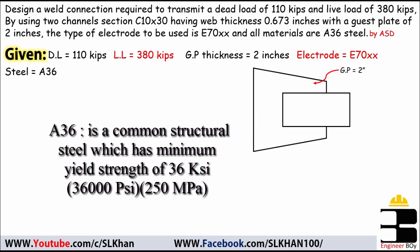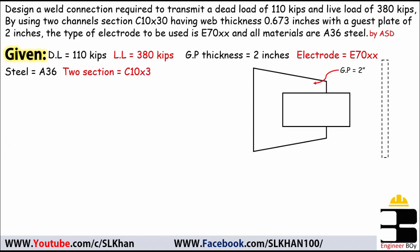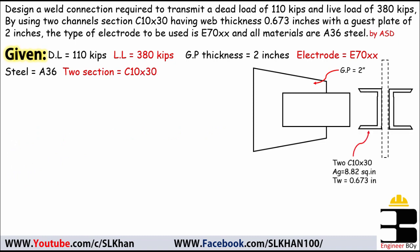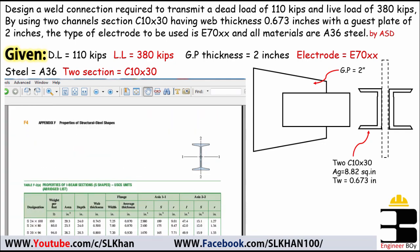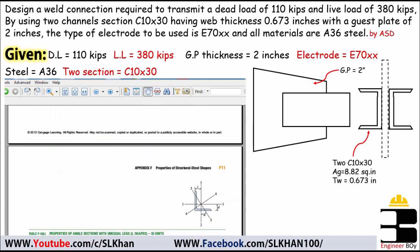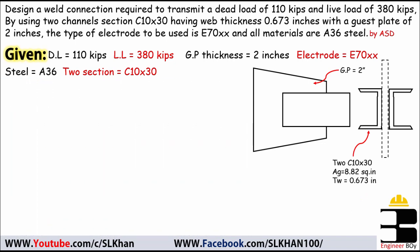The steel used is A36, meaning all materials in the connection are A36. A36 is a code designation meaning the tensile yield strength of the steel is 36 ksi (kips per square inch). The section given is C10×30, which has a gross cross-sectional area of 8.82 square inches and a web thickness of 0.673 inches. These properties can be taken from standard tables available in industry references and textbooks.